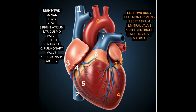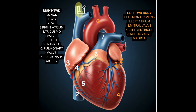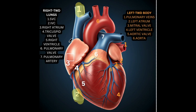Before we jump into the blood flow of the heart, why don't we take a little look at the anatomy of the heart? Here we have an image of the heart. Right here will be the superior vena cava — superior because it's above — and down here we have the inferior vena cava, inferior meaning below, taking blood from the lower part of the body, while the superior is taking blood from the upper part of the body.